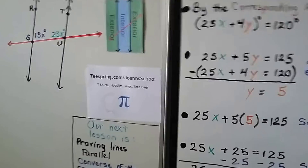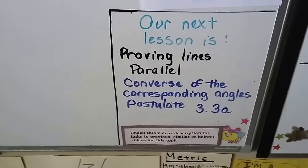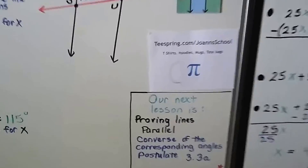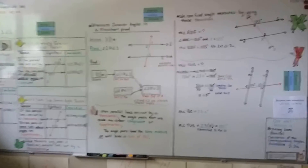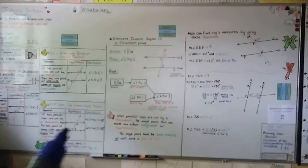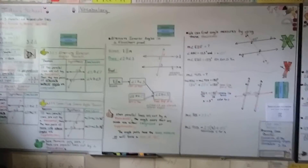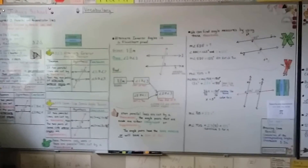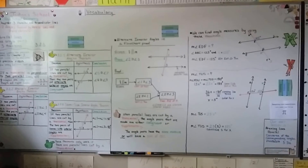Our next lesson is going to be lesson 3.3, where we'll talk about proving lines parallel. And 3.3a is the converse of the corresponding angles postulate. I hope you're taking good notes — there are going to be a lot more proofs in this course. Make drawings and mark the diagrams showing which angles are alternate interior, which are alternate exterior, and try to keep that little drawing of the exterior and interior etched in your mind. See you next time!